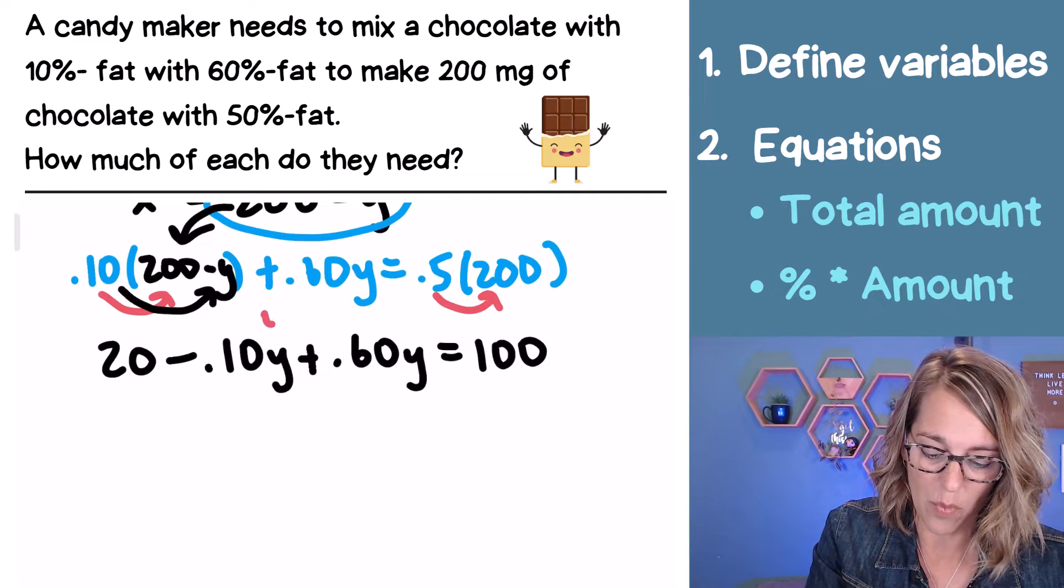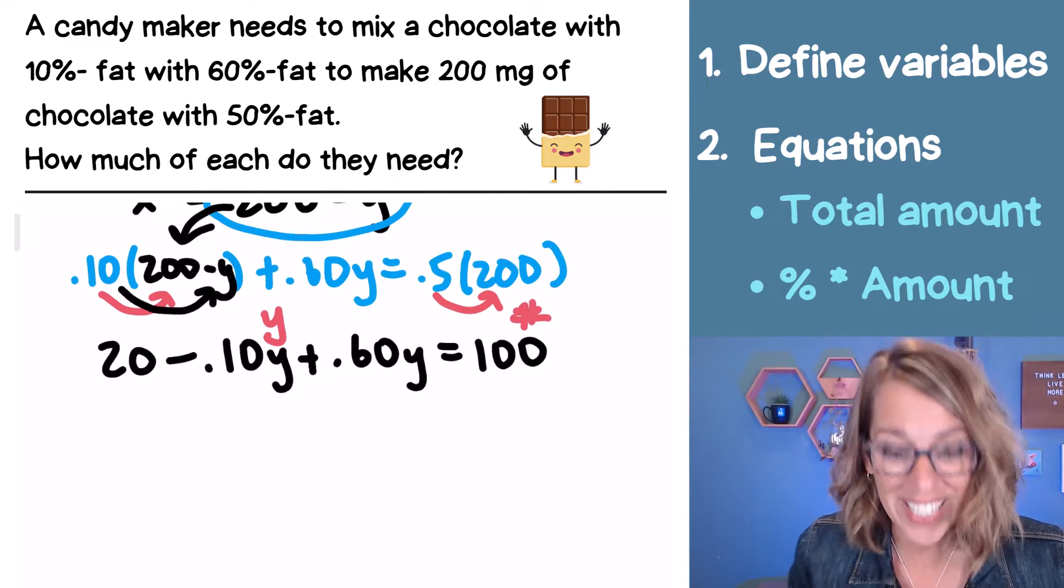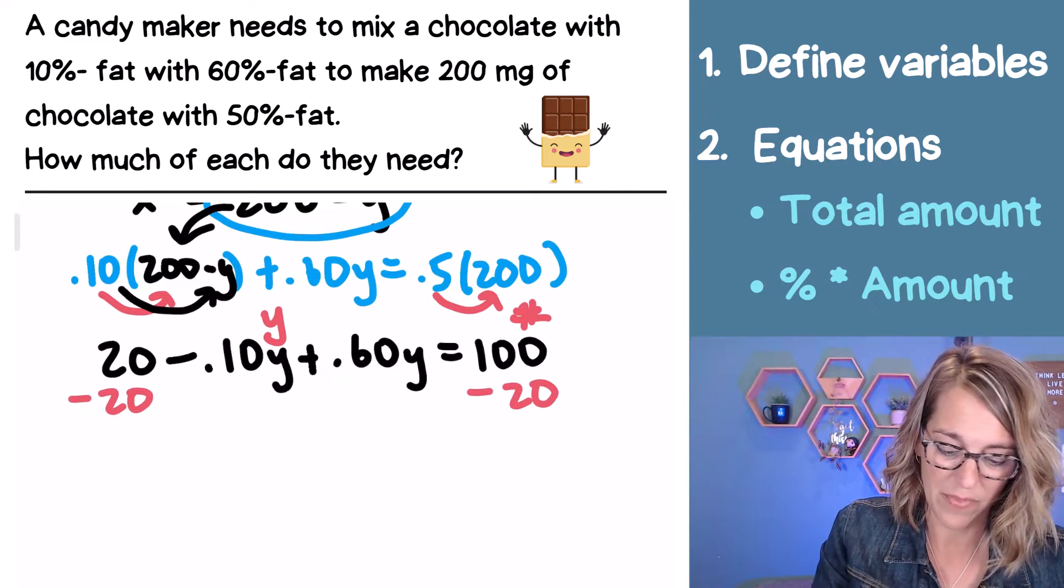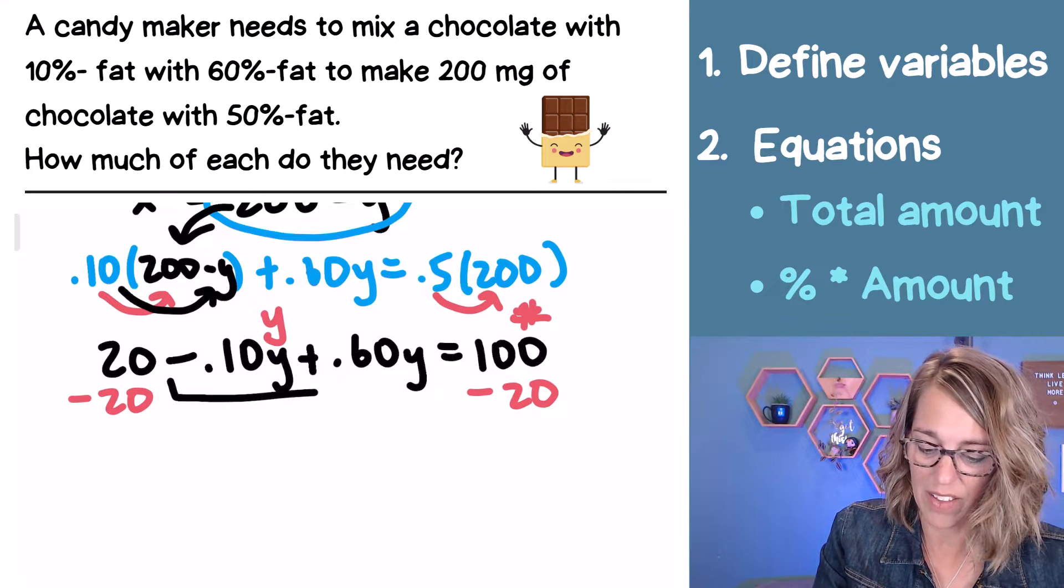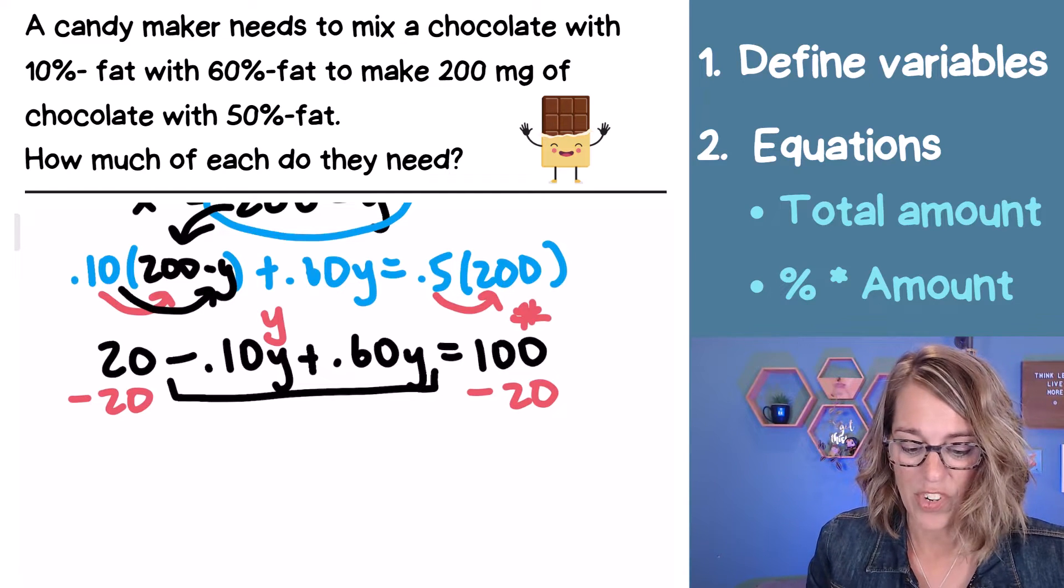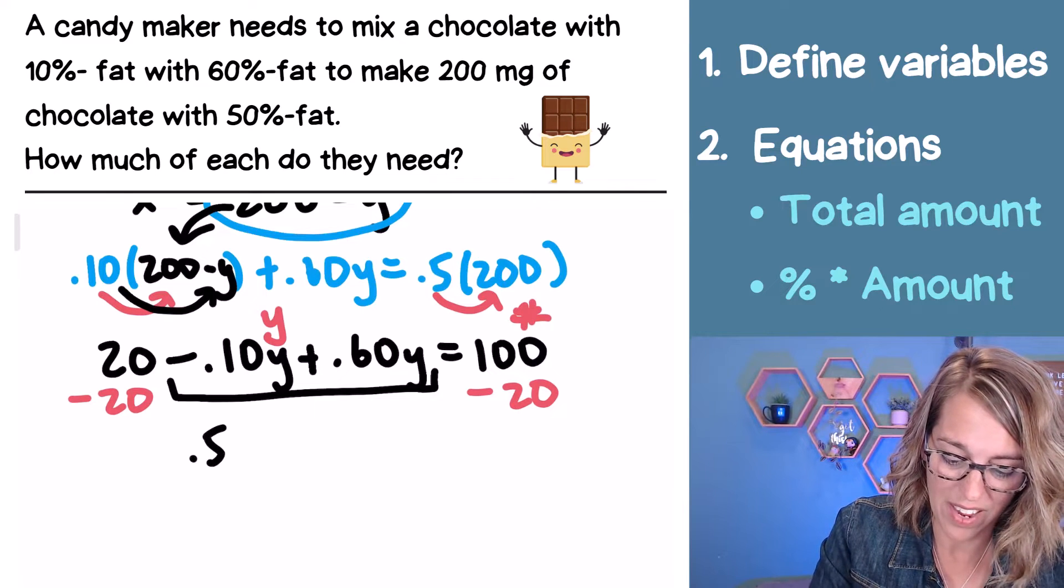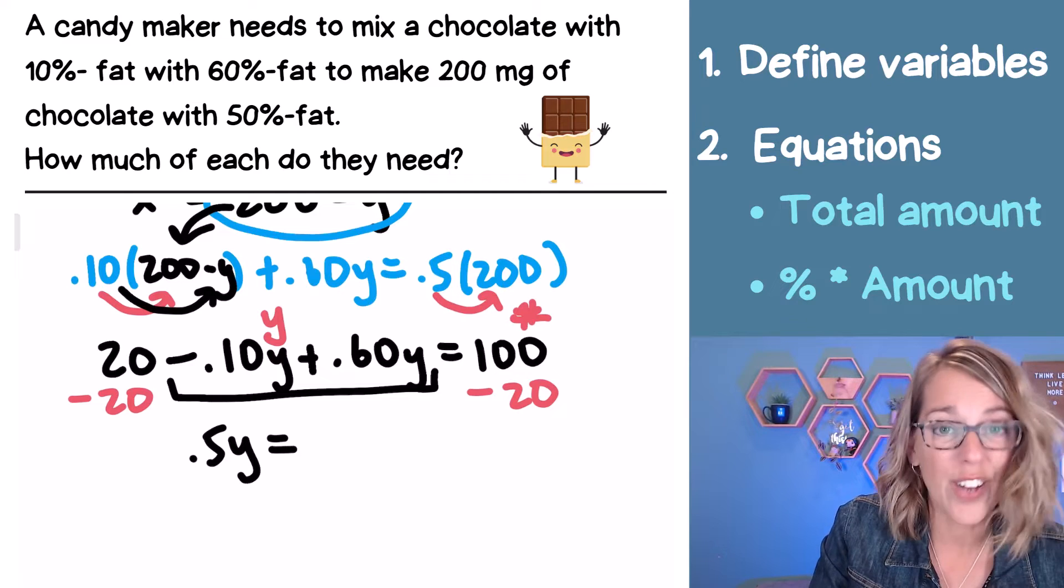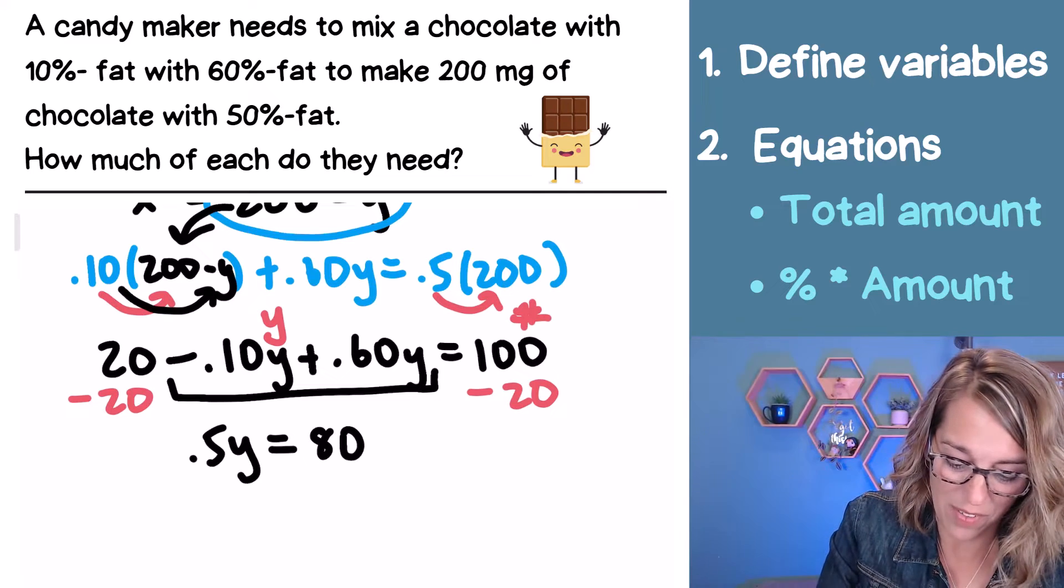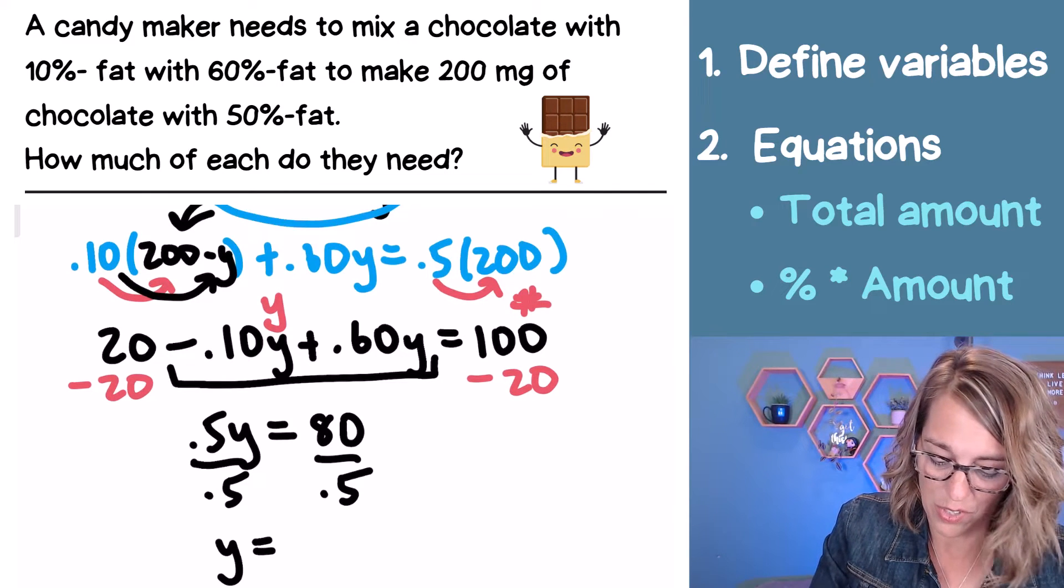Now I definitely want Y's on one side and I want my numbers on the other side. So let's go ahead and bring that 20 to the other side. I'm going to subtract it minus 20. So that's going to give me on the left negative 0.1Y plus 0.6Y. I'm just going to take that negative 0.1 and add it to 0.6. That's going to give me 0.5Y. On the other side, I get 100 minus 20, which is equal to 80. I just need to divide by that 0.5 to solve for Y. Divide by 0.5 and Y is equal to 160.